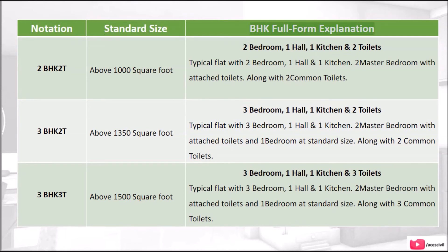2 BHK 2T: above 1,000 square feet. 2 bedrooms, 1 hall, 1 kitchen and 2 toilets. A typical flat with 2 bedrooms, 1 hall and 1 kitchen — 2 master bedrooms with attached toilets, along with 2 common toilets.